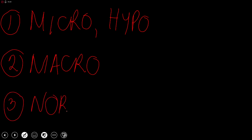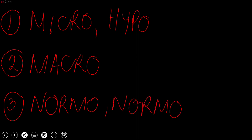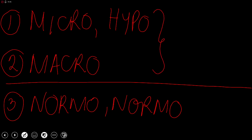The first classification is microcytic hypochromic. We also have macrocytic — usually they are normochromic. And the last one, we have normocytic normochromic anemia. I usually draw a line here to remember that the first two classifications are produced because there is a substance that decreases.